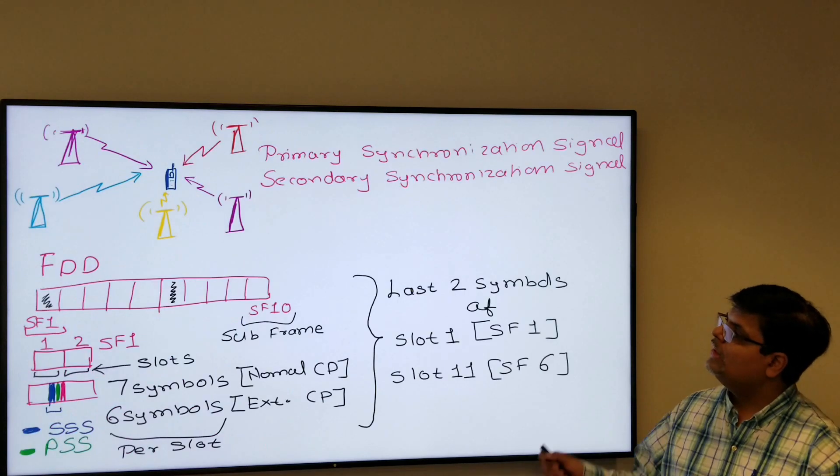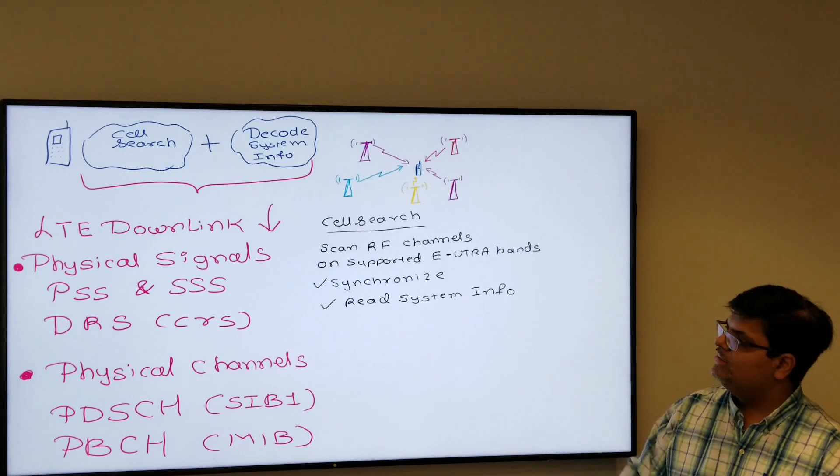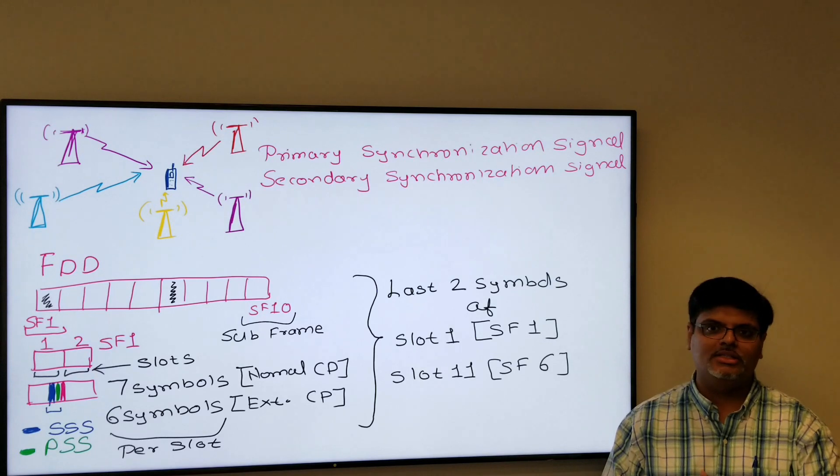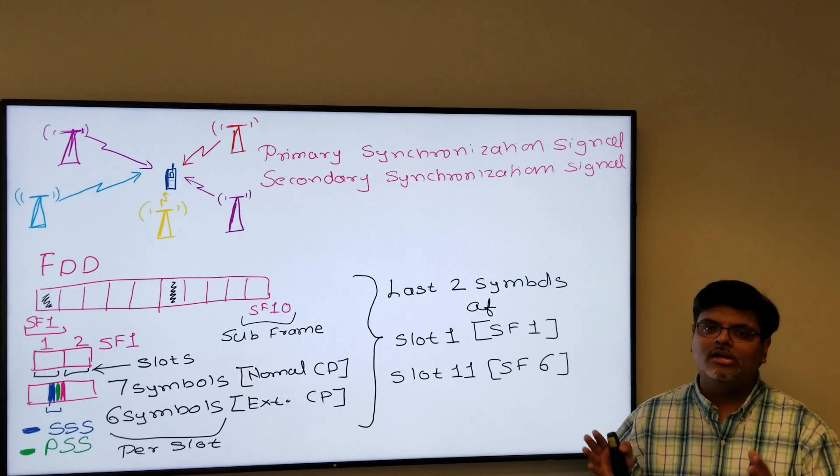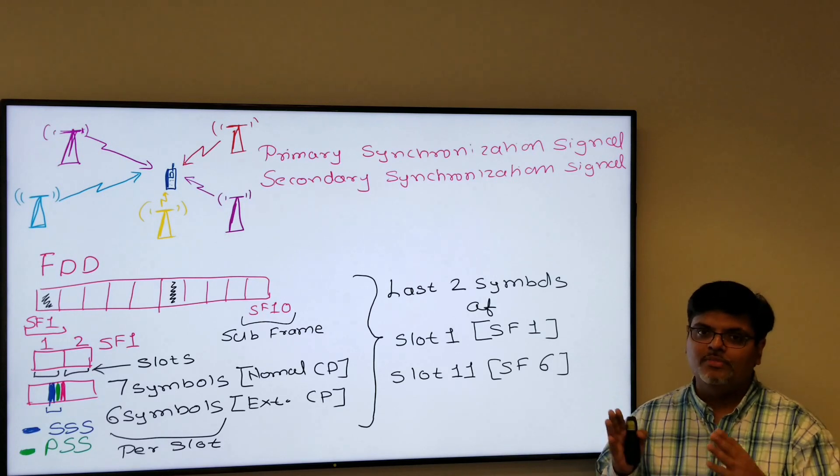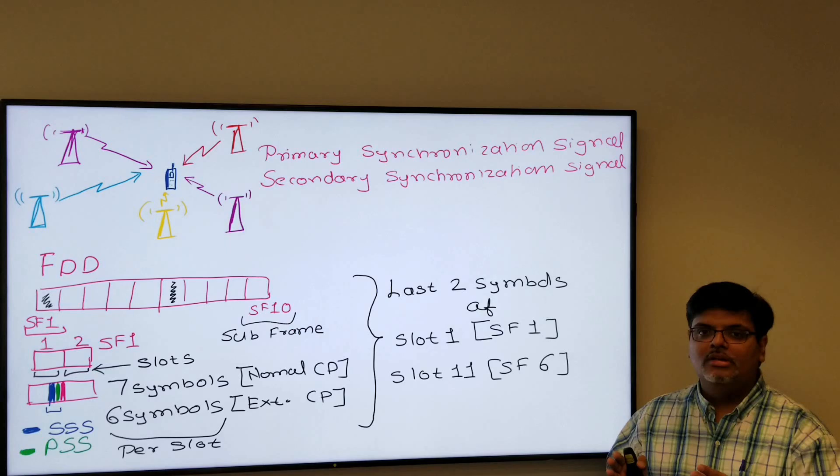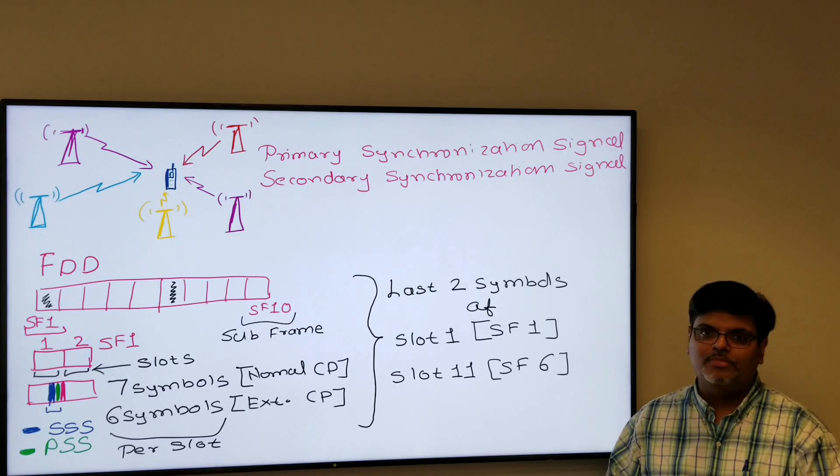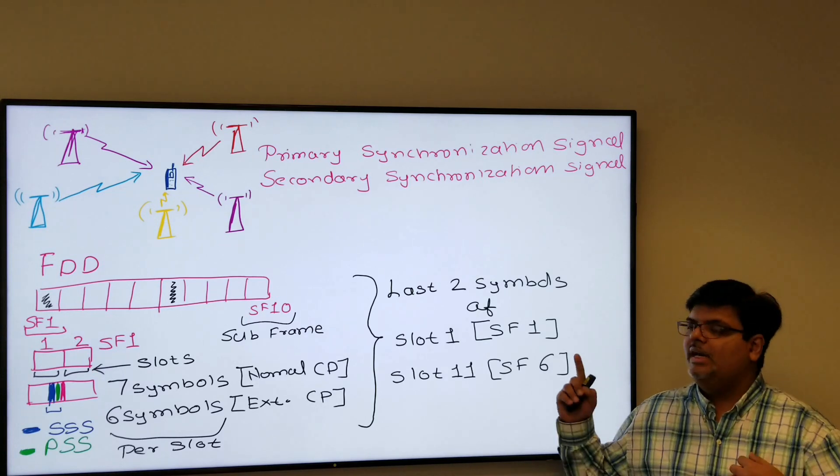Now after scanning all the RF signals, it has to read the PSS and SSS, the primary synchronization and secondary synchronization signal. They are transmitted in the radio frame. Not to go into detail of what is the radio frame, we have a different video for it. The radio frames, every radio frame is divided into 10 subframes of 1 millisecond each, so the total radio frame is 10 milliseconds. Each subframe, which is SF, is divided into two slots of 0.5 millisecond each.